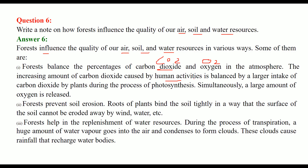Because of human activities — breathing, industries, and various establishments — there is an increasing amount of carbon dioxide. This is balanced by the larger intake of carbon dioxide by plants. Because during photosynthesis, the process of making food, plants intake carbon dioxide and release oxygen, so a large amount of oxygen is released in this process.